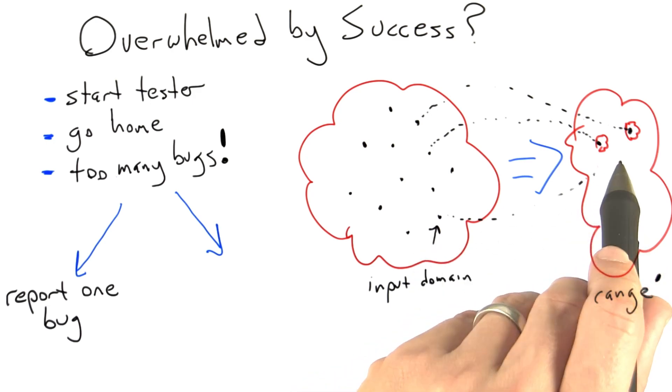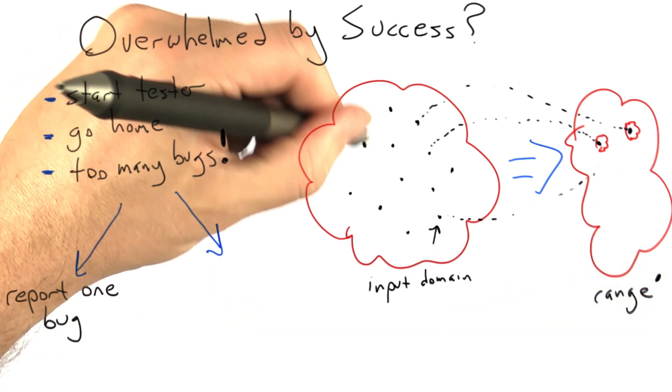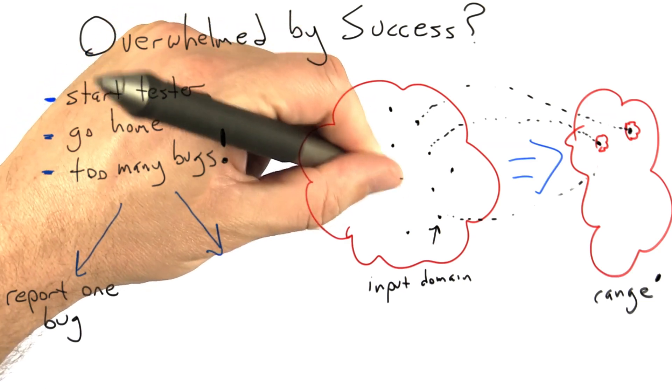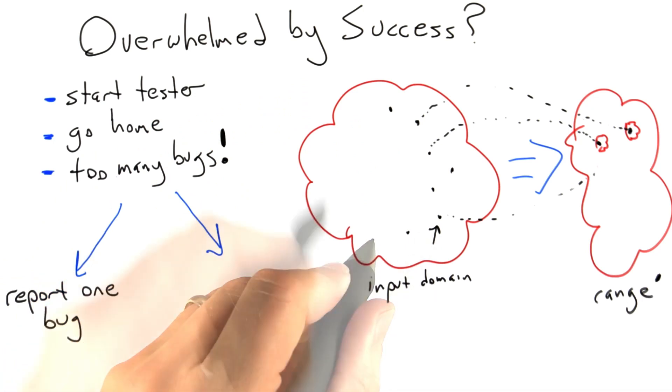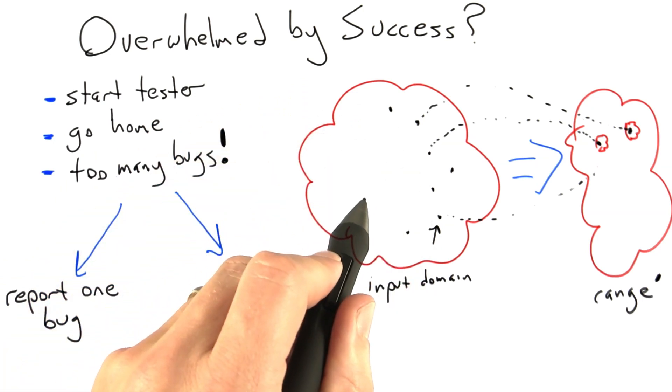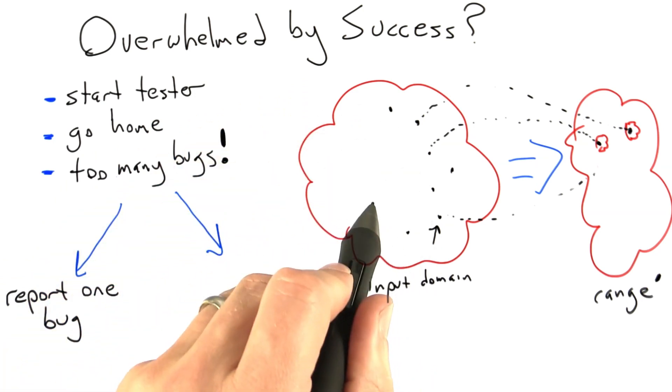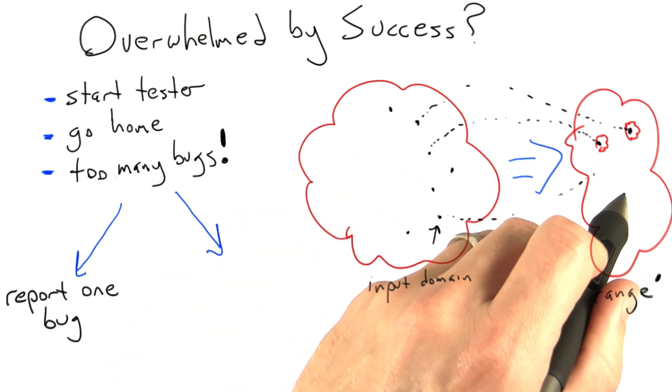Not only did that particular failure go away, but perhaps some of the other ones did. Perhaps all of these over here stopped being inputs that trigger failures anymore. That's great because they fixed a bug that covers such a large part of the input space. On the other hand, another possibility is all of the remaining bug-triggering inputs still trigger bugs. So what do we do?